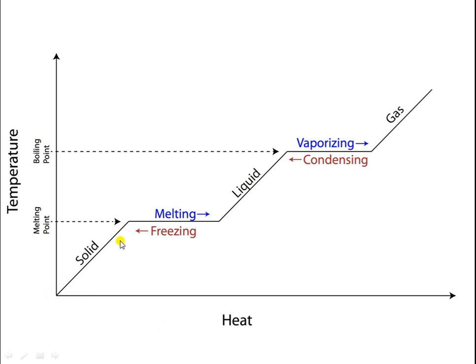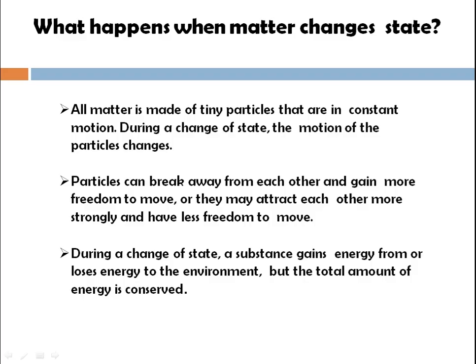If you have a solid and add heat or increase temperature, it converts into liquid — the process is melting; the reverse process is freezing. If you have a liquid and continue increasing temperature, it vaporizes and converts into the gaseous phase; conversion of gaseous phase back to liquid is known as condensation. During a change of state, particles can break away from each other and gain more freedom to move, or they may attract each other more strongly and have less freedom to move. During a change of state, a substance gains or loses energy to the environment, but the total amount of energy is conserved.